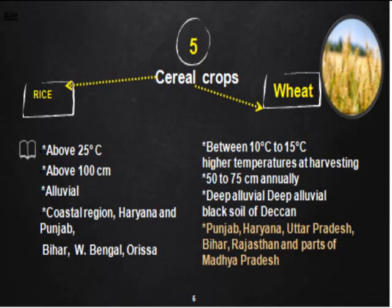Haryana, Punjab, Bihar, West Bengal, and Odisha are the popular rice-producing states in the country. China is the largest producer of rice in the world with 35 percent of total world rice production. India ranks second in rice production globally, and within the country West Bengal is the largest producer of rice.